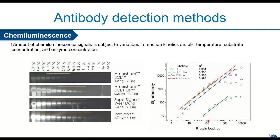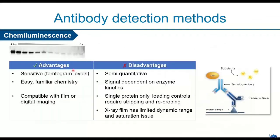Looking at the signal linearity graph, all these ECL substrates have good signal linearity, but some are no longer linear above 1000 picograms of protein load — indicated by square and triangular markers. When signal linearity breaks down, the substrate is no longer qualified for quantitation, as the signal no longer accurately represents the actual protein amount. We need the signal to be linear: the higher the signal, the more protein you expect.